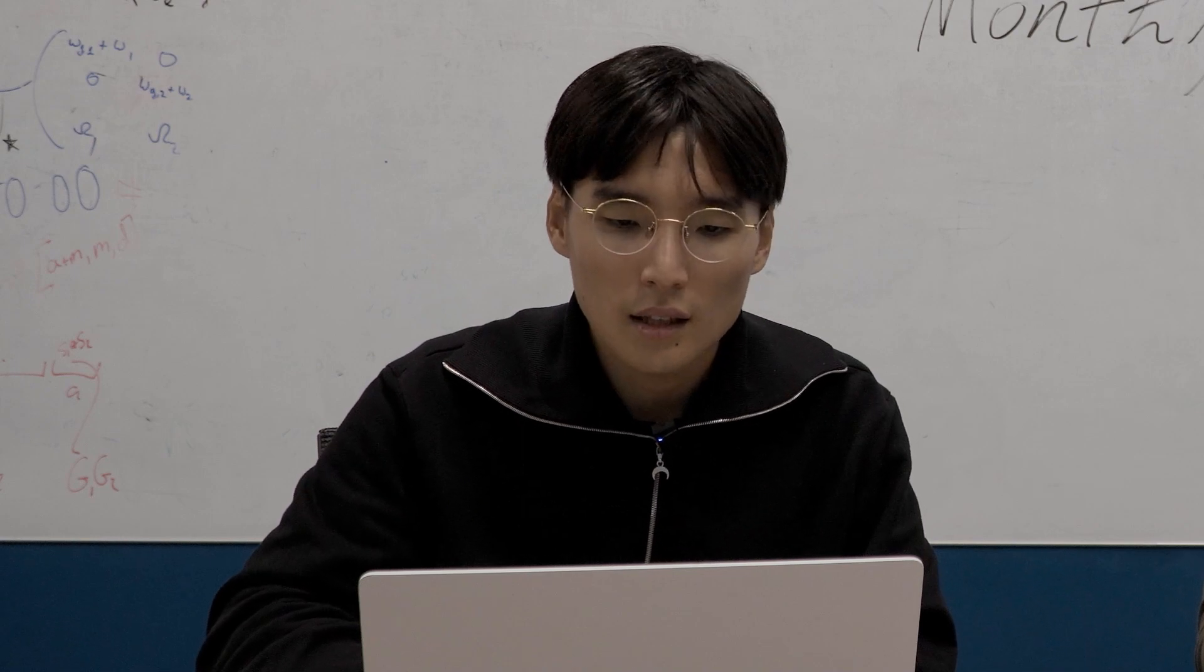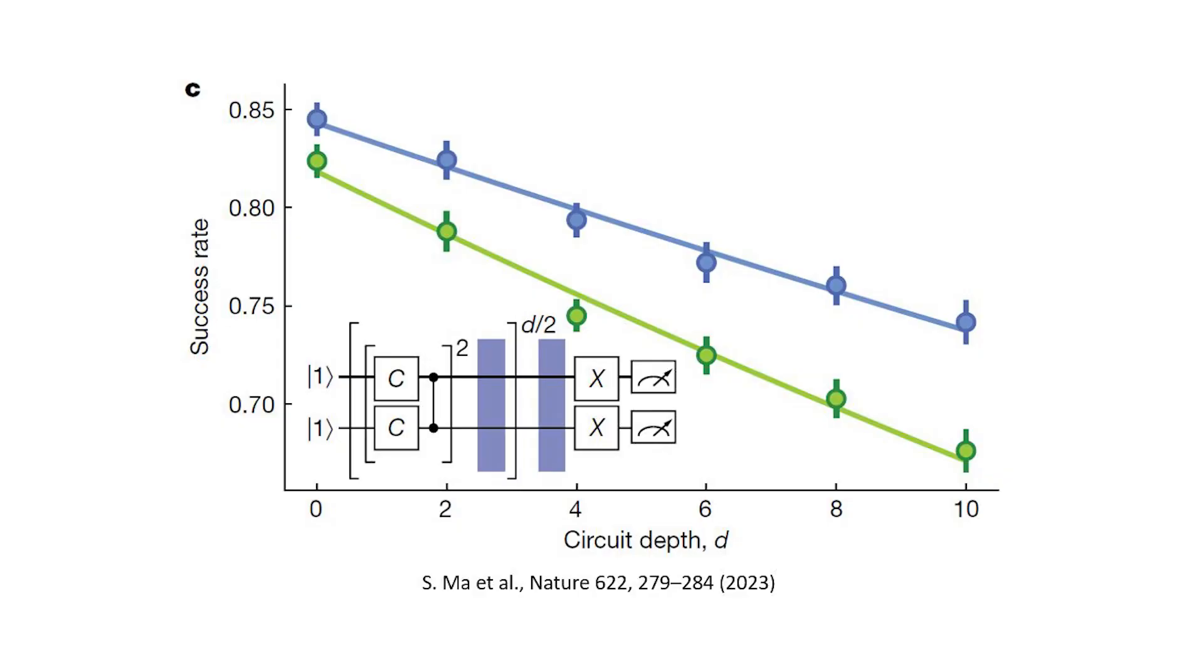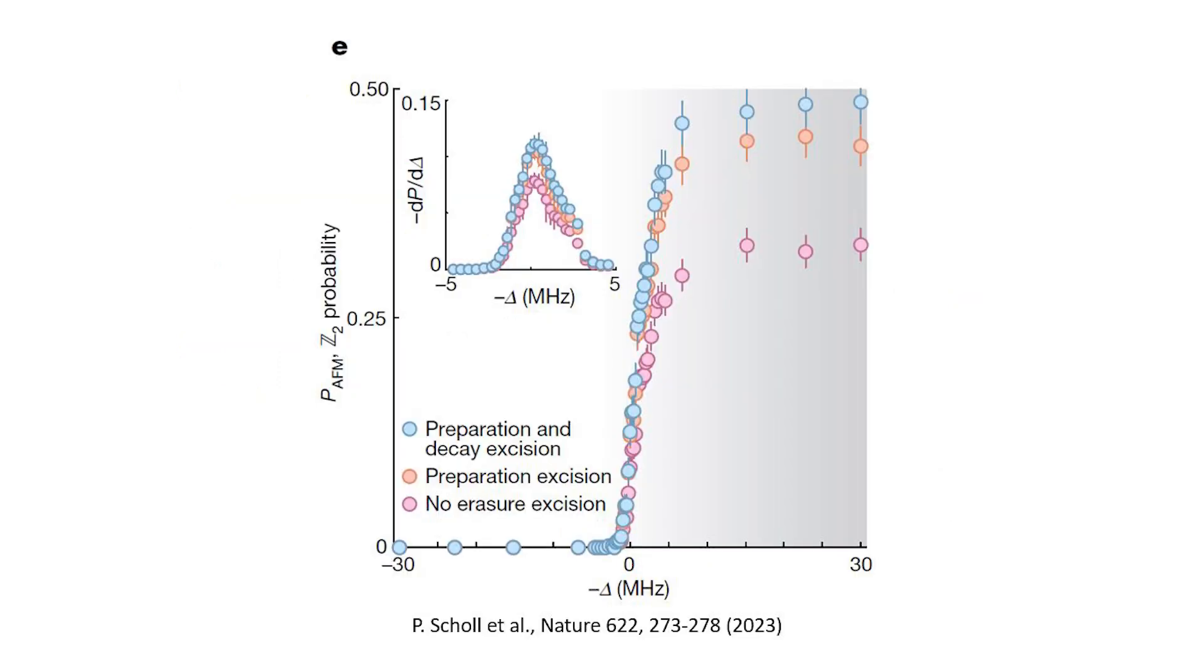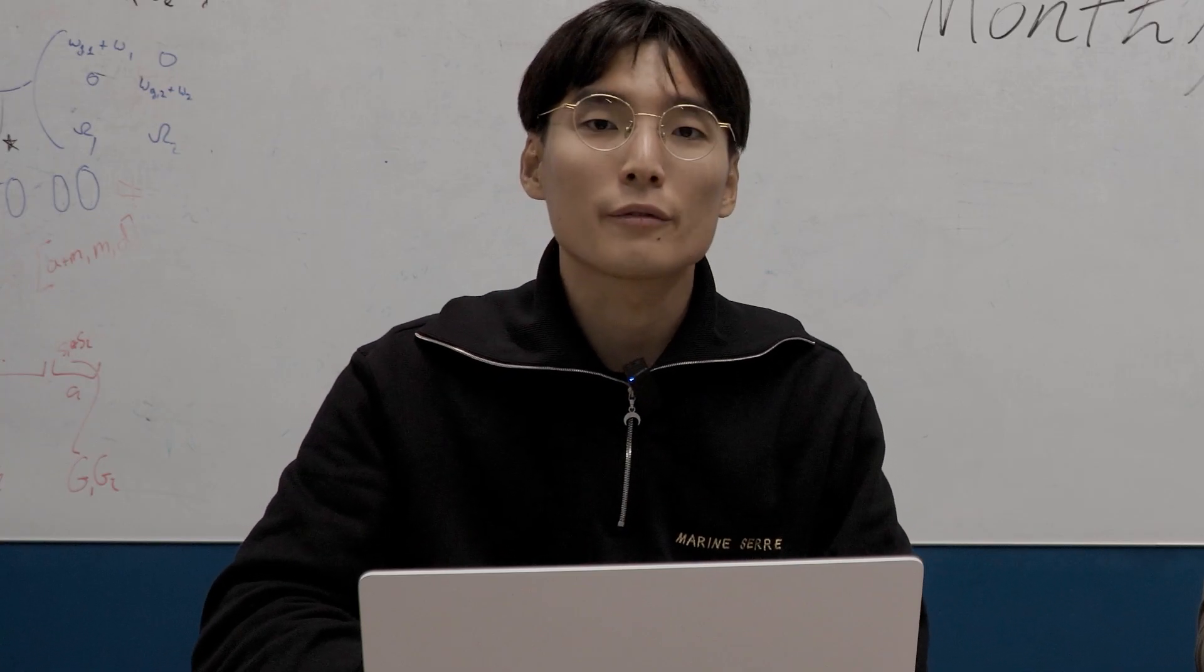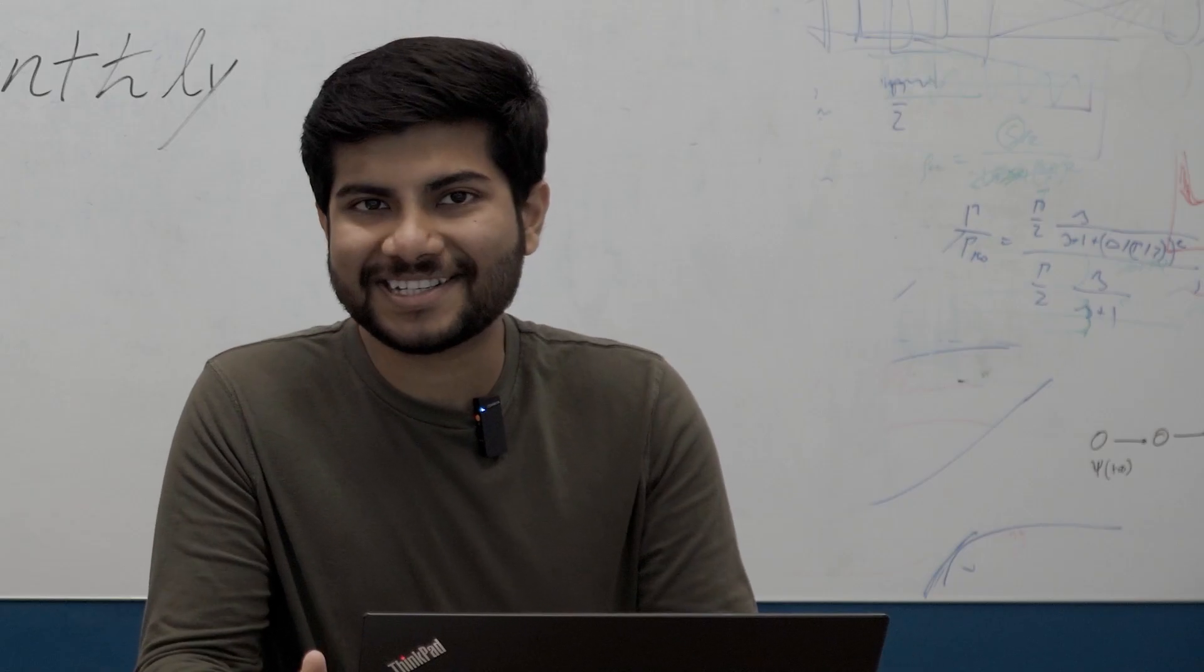So that's what the Princeton and Caltech experiments did. There are some interesting differences. The team led by Princeton used a terbium atom and focused on analyzing the gate error rate. Caltech team used strontium atom and explored how much erasure conversion can improve the accuracy of quantum simulation experiments. Now you should check out the papers for more details.